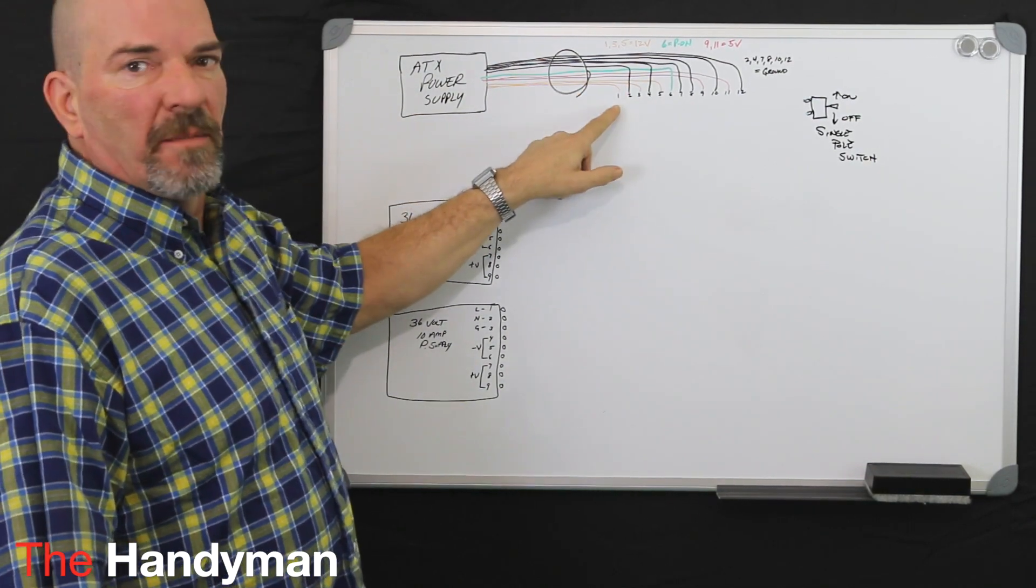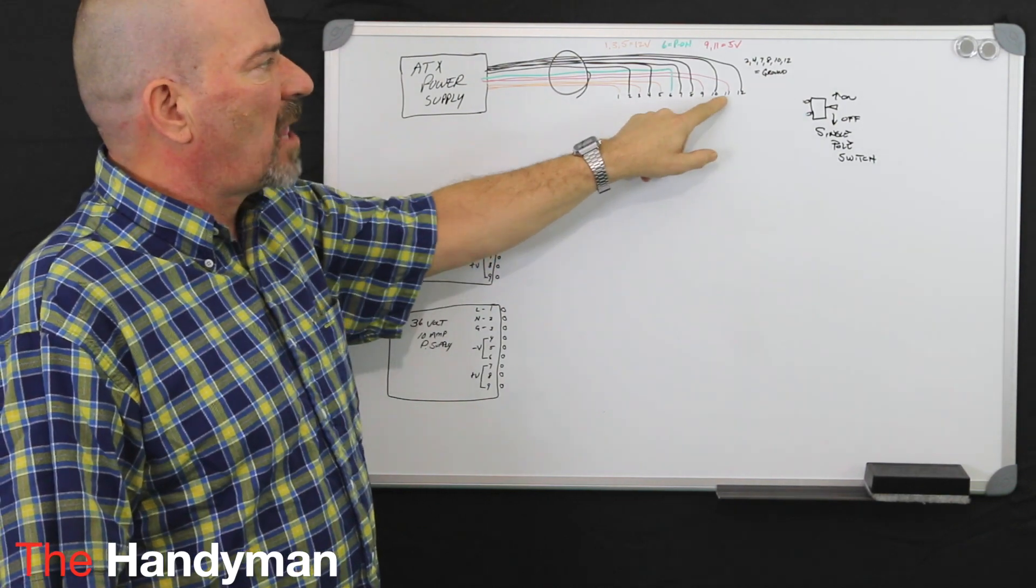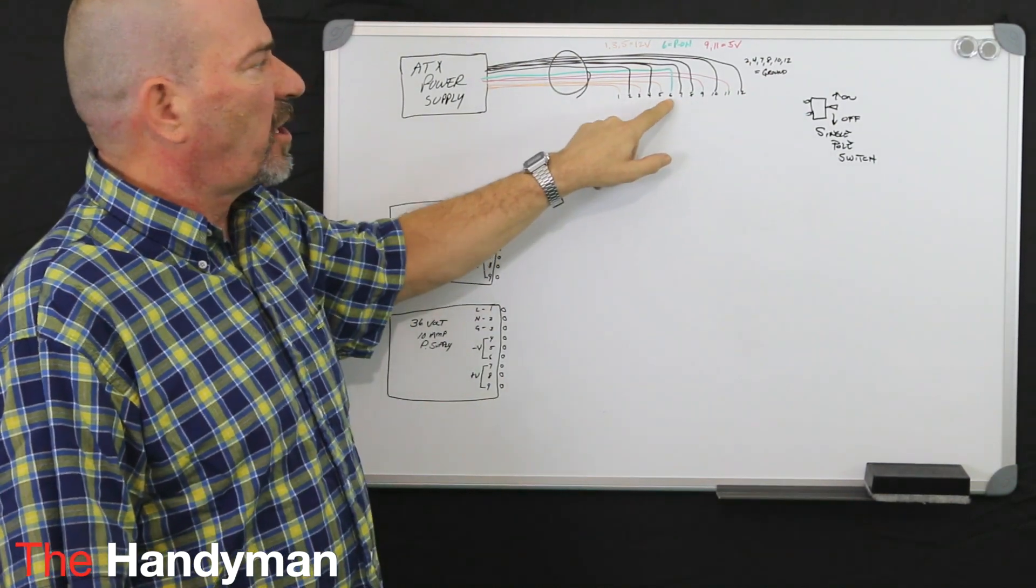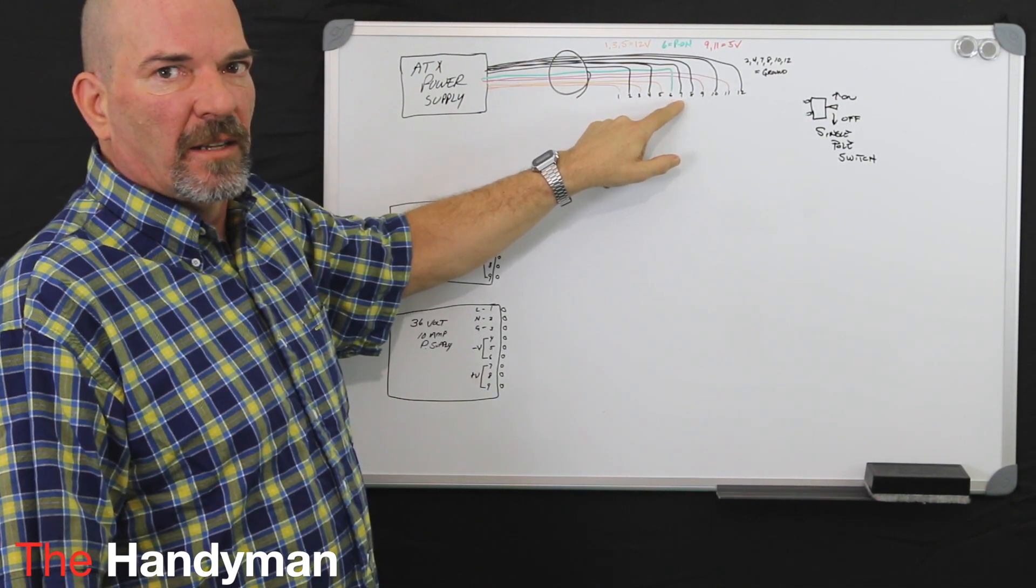You should have paired up your yellows and blacks on your terminal strip, your reds and blacks on your terminal strip, and taken your green, which is your switch, and paired that with a black.